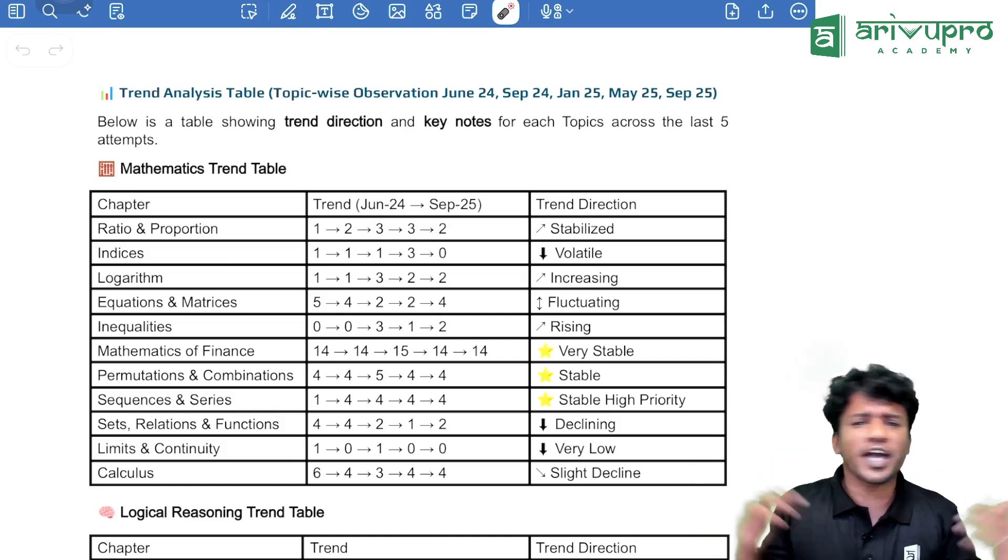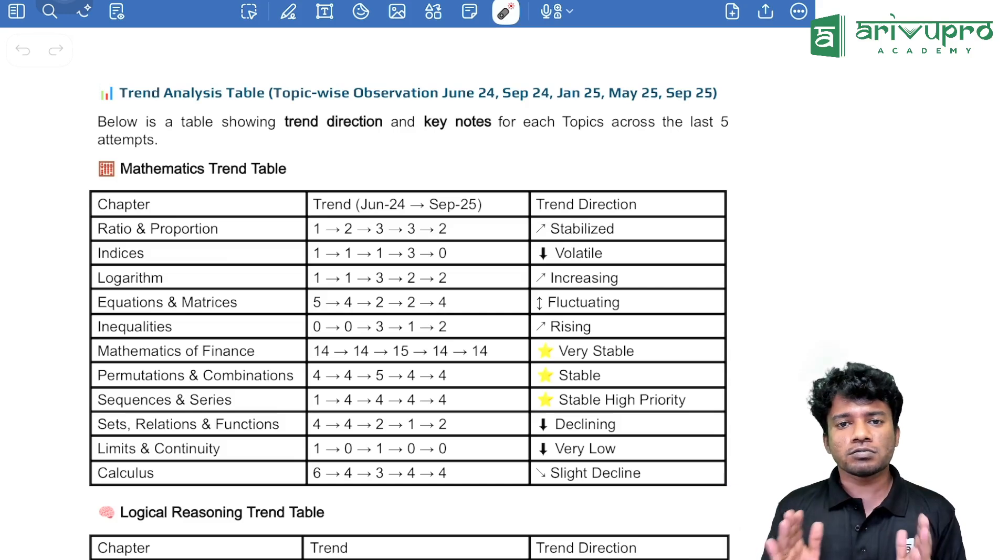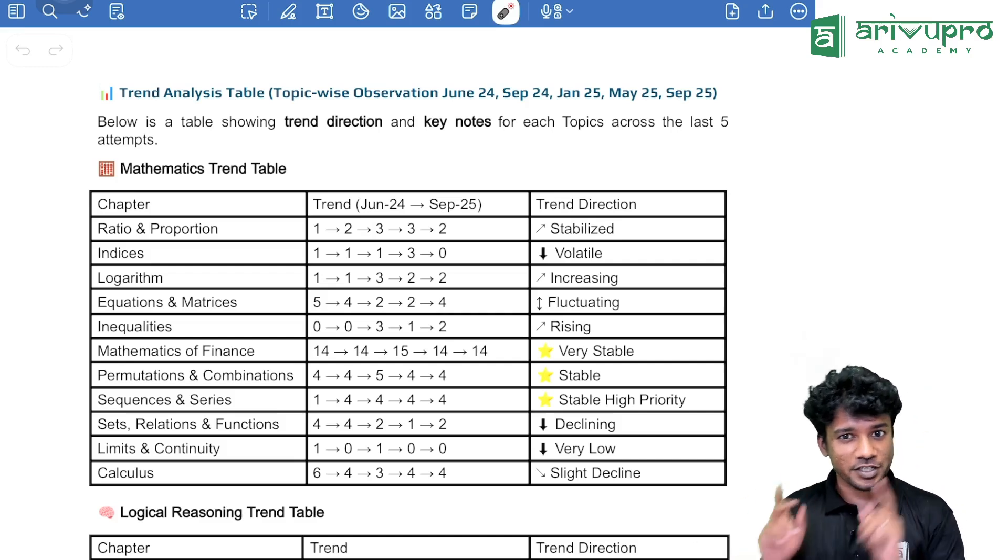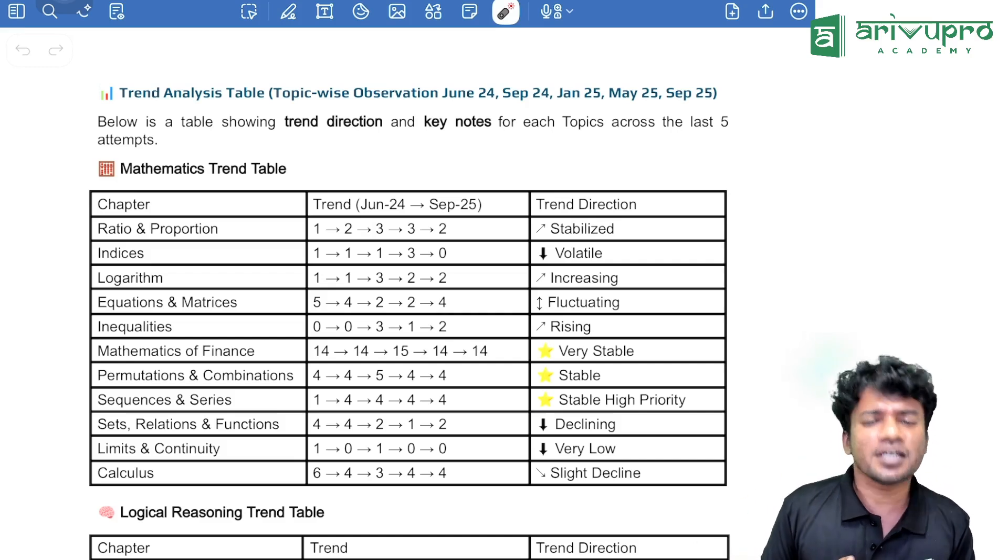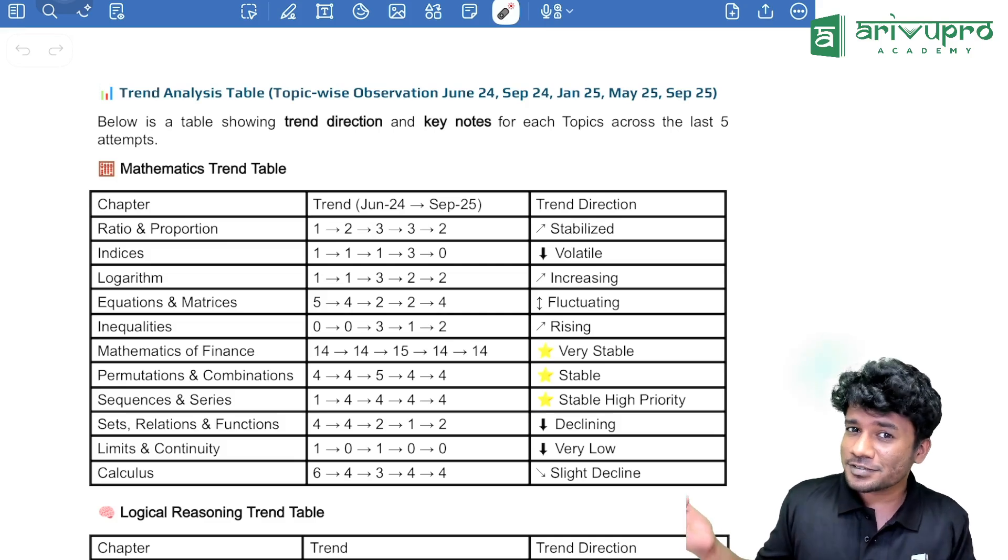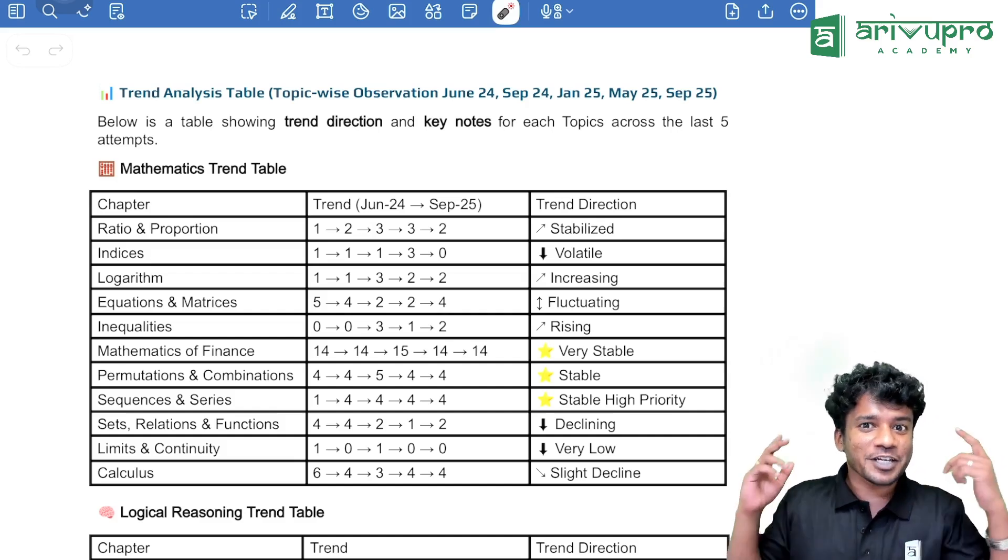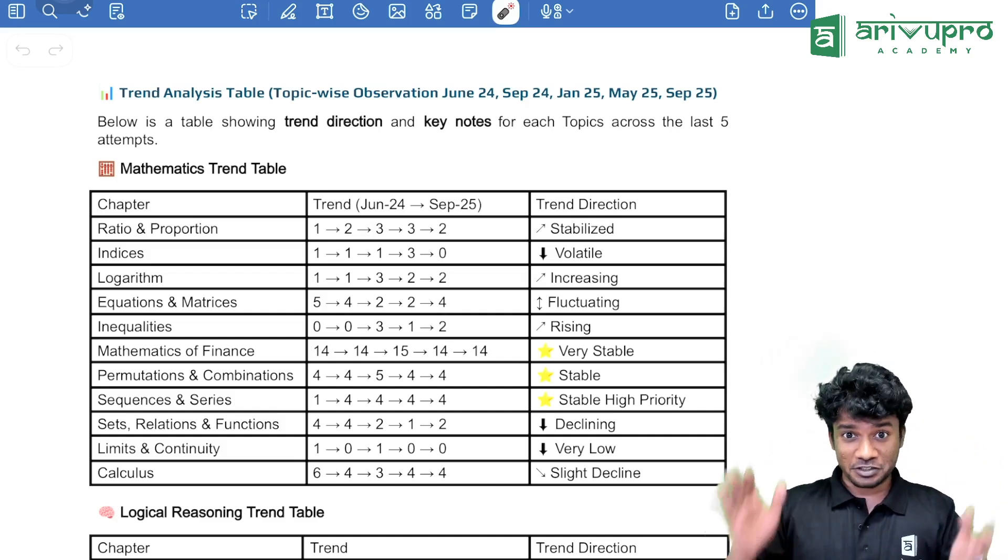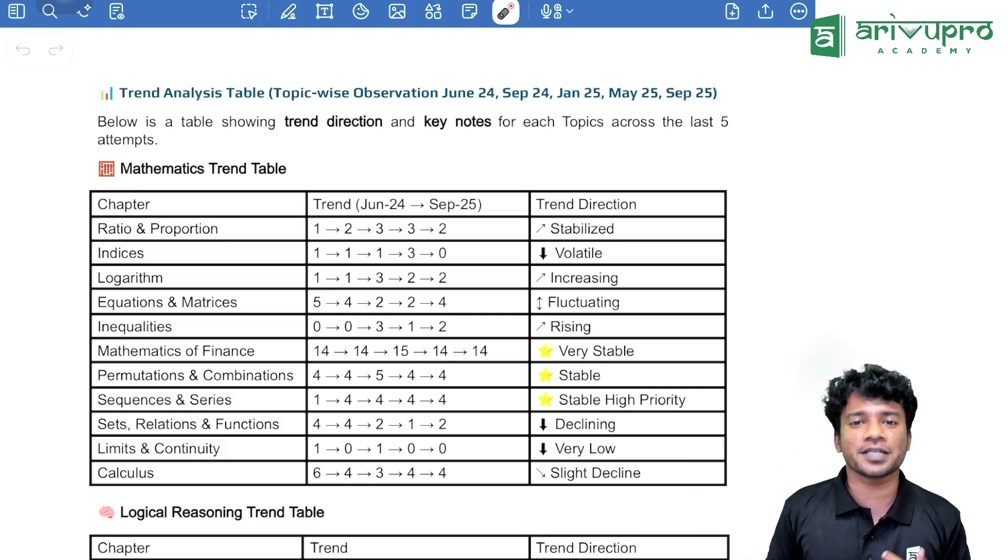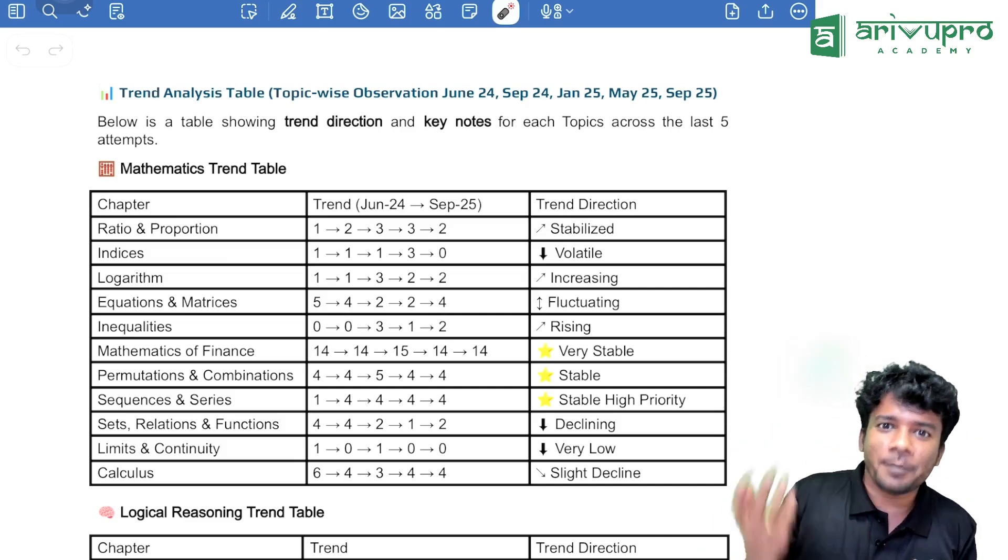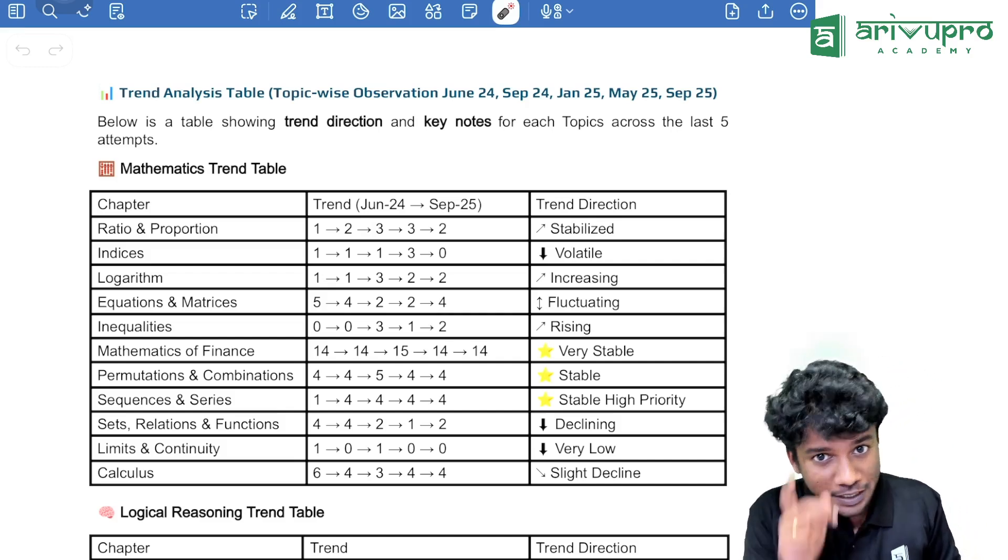Today in this video, we are going to discuss how marks were distributed topic-wise in the previous five attempts of CA Foundation quantitative aptitude examination. As you know, it's a MCQ based paper where negative marking is there, so you should know the trend when you are attending a paper like where there is negative marking to focus mainly on what topics. Then in this video, we will also discuss or predict the number of marks which can come for the coming attempt, that is Jan 2026 attempt.